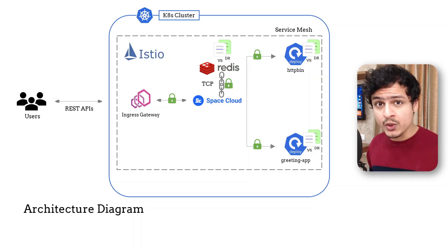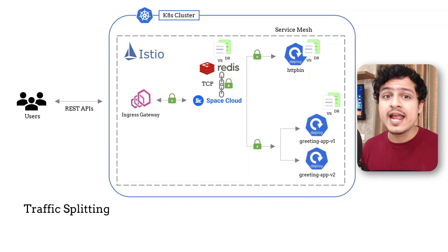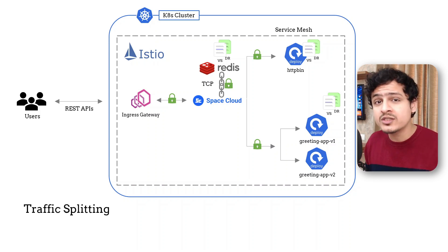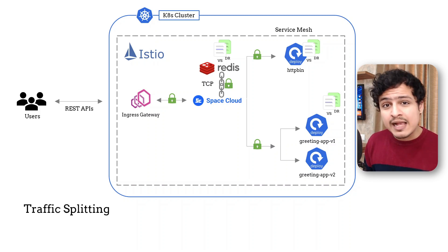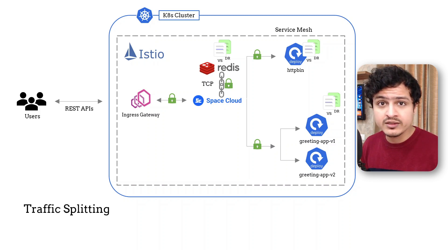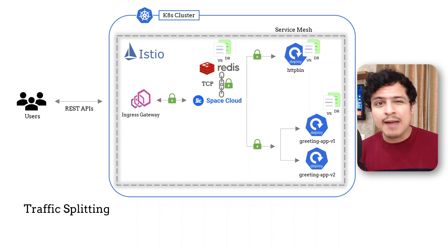Now let's do something special, shall we? Let's explore just one tiny feature that Istio unlocks for us. What I want to show you is called traffic shifting. This is the feature that enables canary deployments. The idea is to simply split incoming traffic between two versions of the same service. This is helpful when you want to test out a new version before you fully deploy it. The advantage we get from Istio is that this split is done by the platform — we don't need to write any application code to make any of this work.